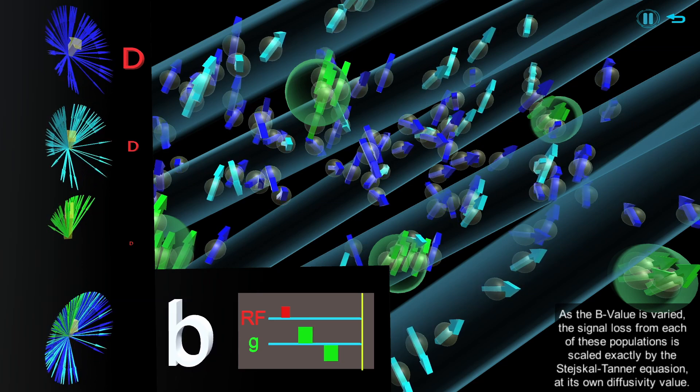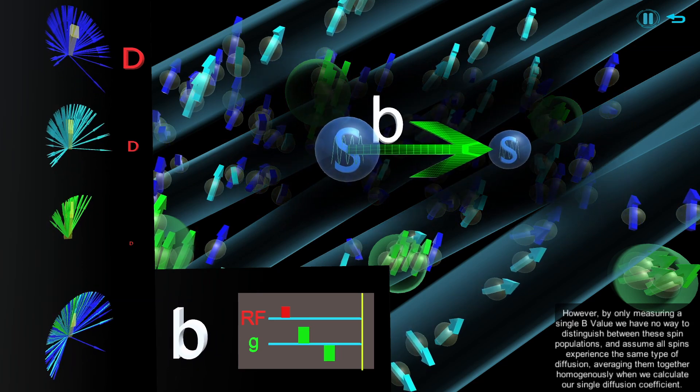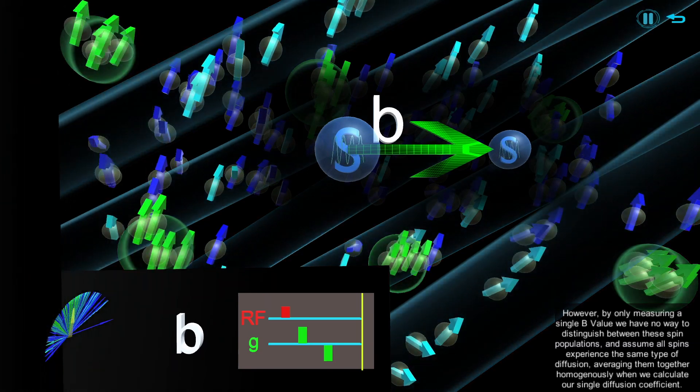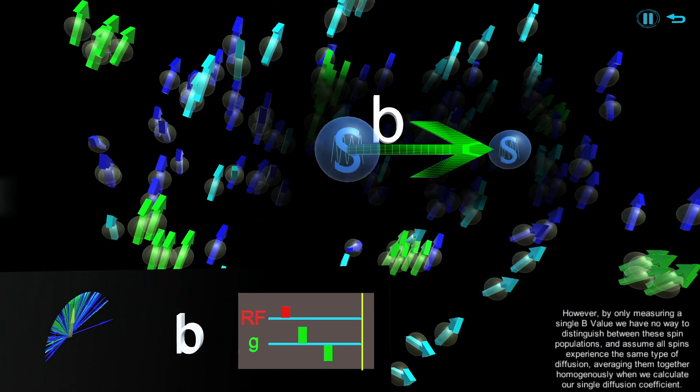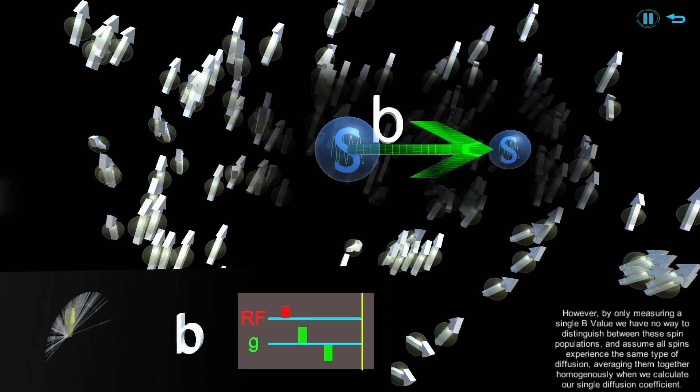However, by only measuring a single b-value we have no way to distinguish between these spin populations, and assume all spins experience the same type of diffusion, averaging them together homogeneously when we calculate our single diffusion coefficient.